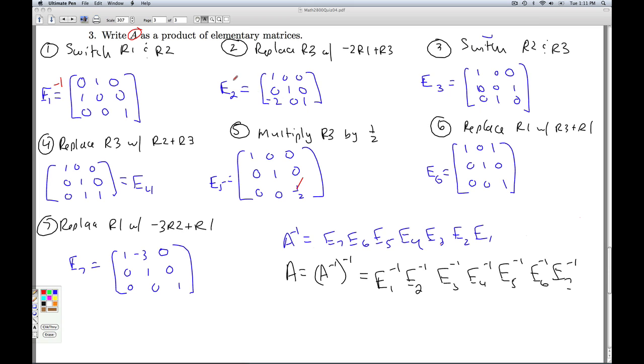What about E2 inverse? I've replaced row 3 with negative 2 row 1 plus row 3. So how do I get back to my original row 3? Well, I add two row 1s back to it. That's the inverse there.